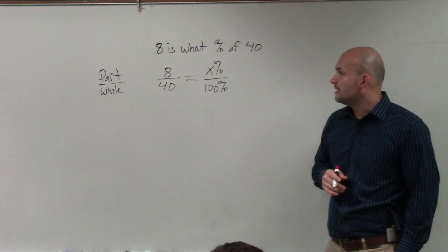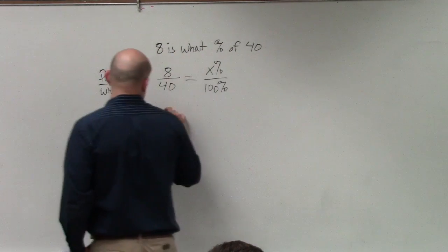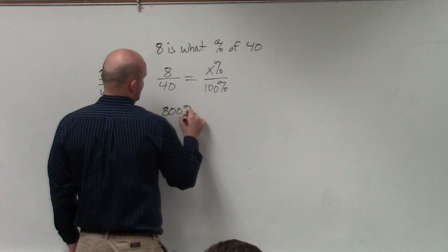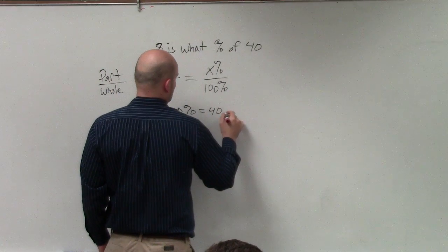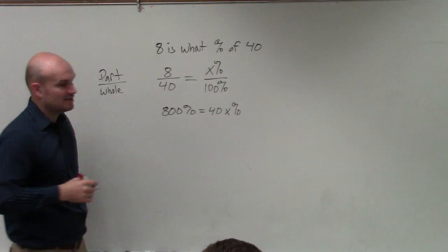So basically, what we would do is use the cross product, where we would have 800% equals 40 times x percent. That's by applying the cross product.